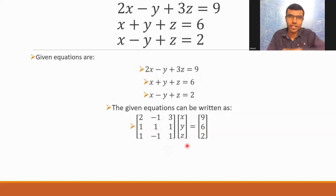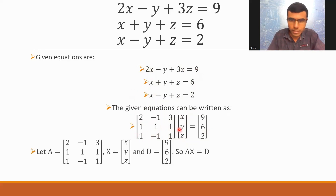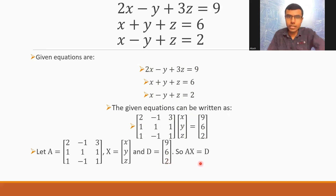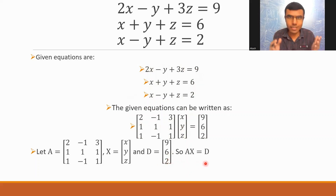In between I have x, y, and z. This first matrix I'm going to take as A, the second matrix as x, and the third matrix as D. So, hence, I have the matrix equation A times x equals D.